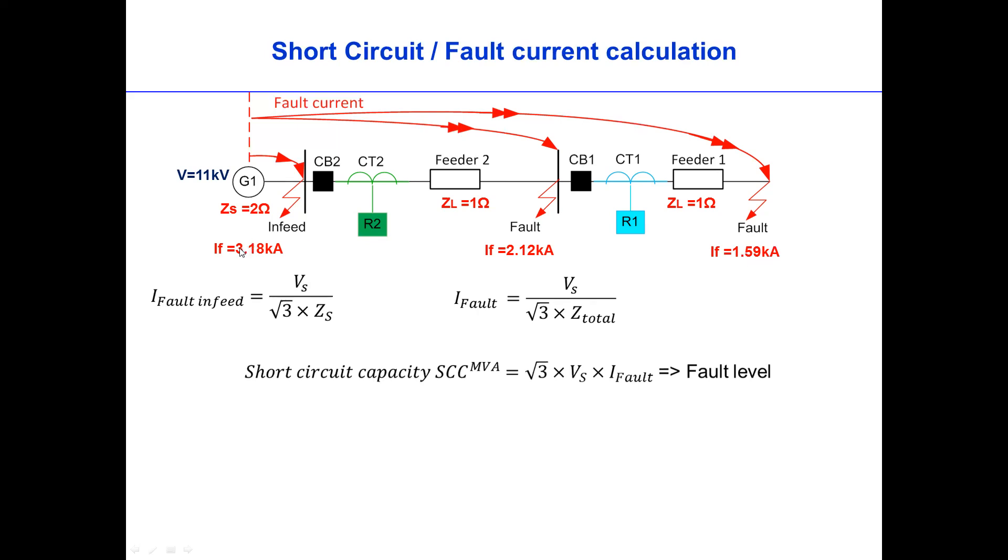If you look at the fault current, near the generator is always strong because there is less total impedance. And then far from the source is less because the total impedance will oppose the current flow to the fault point.